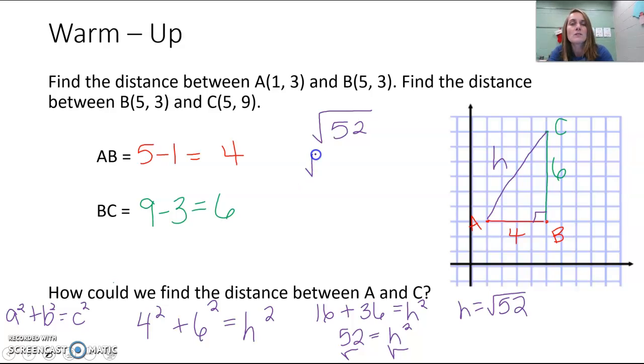So I could break that up into the factors 4 and 13. That's 4 times 13 is 52, which means I could do the square root of 4 times the square root of 13, and the square root of 4 is 2. The square root of 13, well, that's still just the square root of 13 because it's prime. So h is equal to 2 square root of 13.